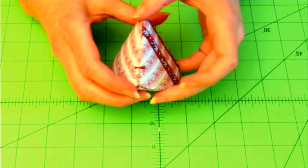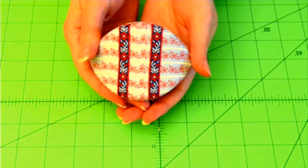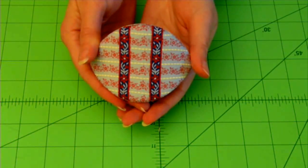And then at each end of the point where the case opens, I'll just put a little bar tack in for reinforcement. And there is my finished clamshell case.